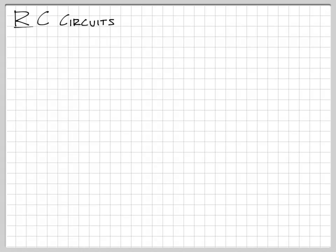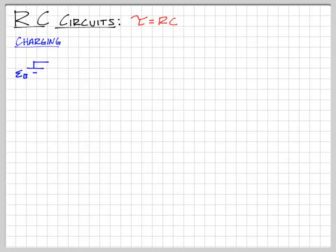The first thing we're going to look at is RC circuits. The biggest thing for this is that, in general, our time constant tau is going to equal RC.